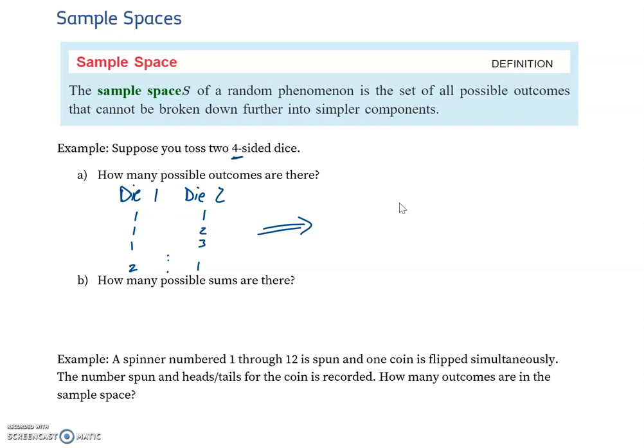So how many possible outcomes for the first die? Well, it's four-sided, so there's just going to be four. And then how many outcomes for the second event or the second stage? This is another four-sided die, so that's going to be four. And we just multiply these together. So we say four times four equals 16 possible outcomes.